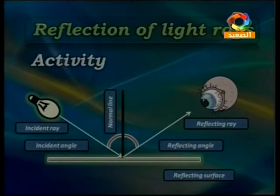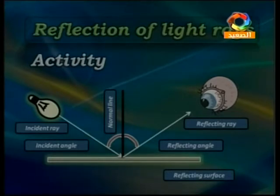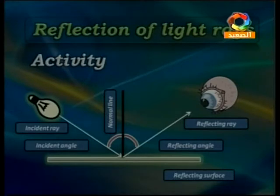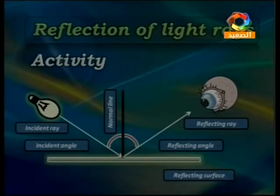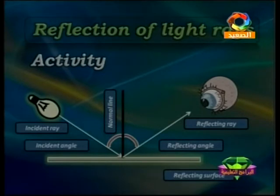The incident angle is found between the incident light ray and the normal line. The reflecting angle is found between the reflected light ray and the normal line. These two angles must be equal, like a tennis ball that reflects off a wall and returns to your face. For example, if the incident angle is 40 degrees, the reflected angle is also 40 degrees; if it is 30 degrees, the reflected angle is 30 degrees.